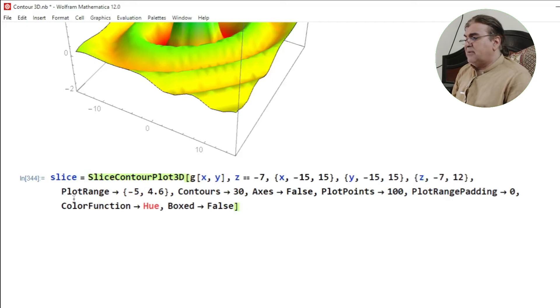And then I ask Mathematica to plot it between the range from minus 5 to 4.6. I add other commands like Contours 30, Axes False, PlotPoints 100, PlotPadding 0, ColorFunction, and Boxed False. So this condition will plot the data without creating a box. If I run this part of the program,